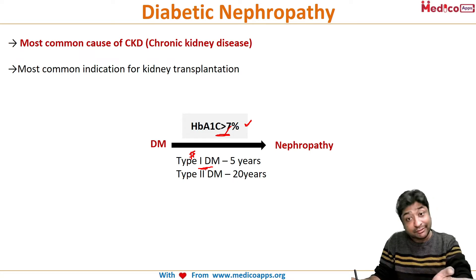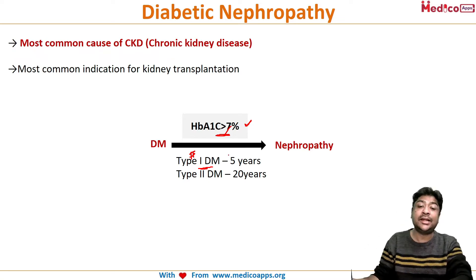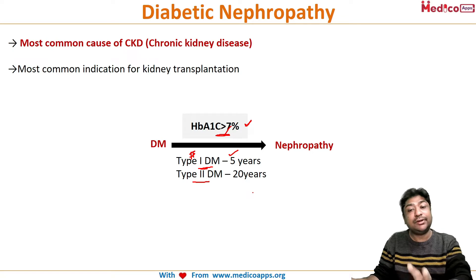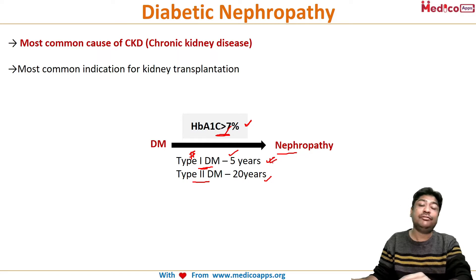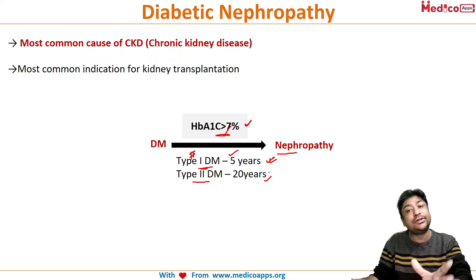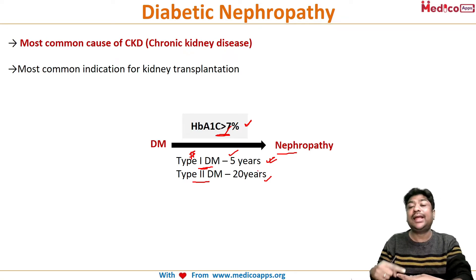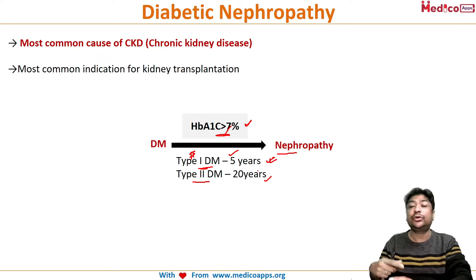With poor control, a type 1 diabetic patient can progress to nephropathy in as early as 5 years, whereas type 2 diabetic patients will take around 15 to 20 years to develop diabetic nephropathy. Similarly, almost every type 1 diabetic patient will develop retinopathy very early, whereas not all type 2 diabetic patients will get retinopathy. It all depends on how good the glycemic control is.